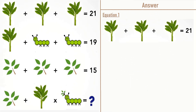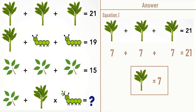Let's take equation number one, which says leaves plus leaves plus leaves is equal to 21. 7 plus 7 plus 7 is equal to 21, so leaves is equal to 7.